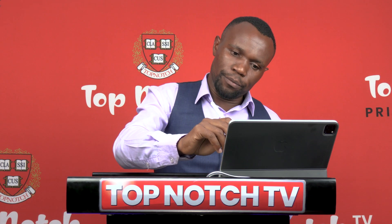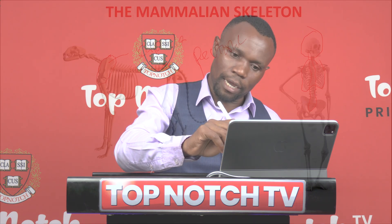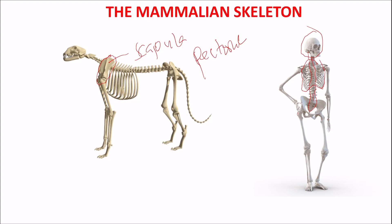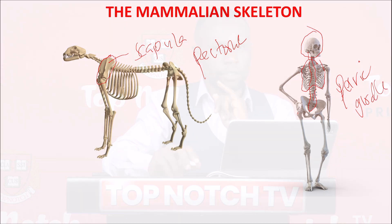Likewise, our hind limbs — the legs — are attached to our axioskeleton at the region of the pelvis by specialized bones that form the pelvic girdle. Therefore, the appendicular skeleton comprises the forelimbs and the hind limbs alongside the pectoral girdles and the pelvic girdles.